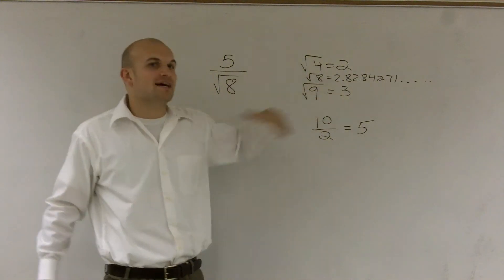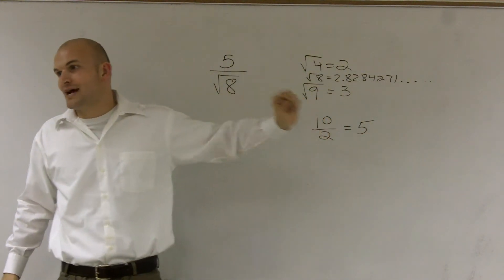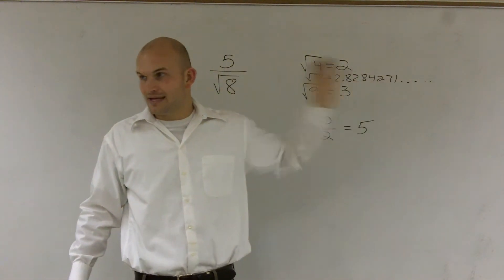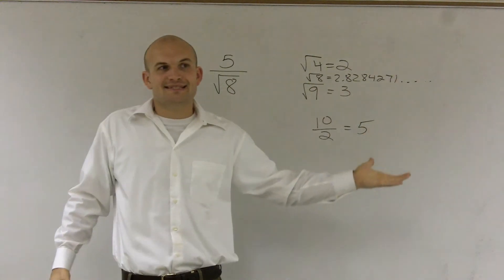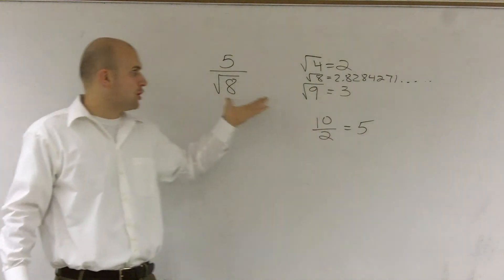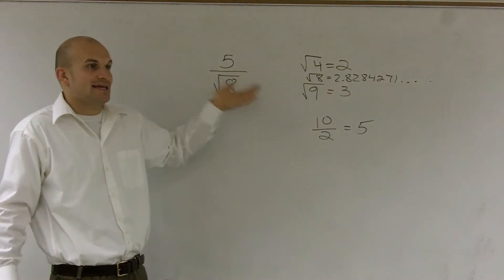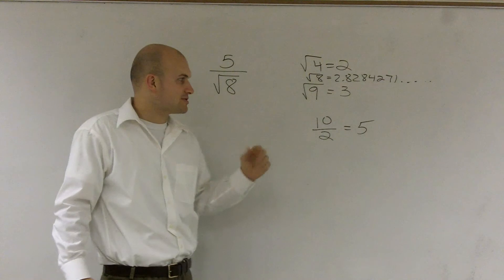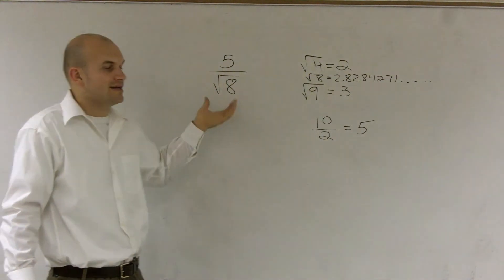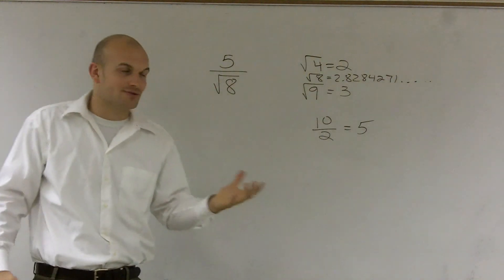Well, if I say there's a number that goes on forever and I can't write down the last digit, I can't divide that number into a whole number to get an answer, right? Because my answer is going to be an irrational number. So we can never divide by an irrational number.